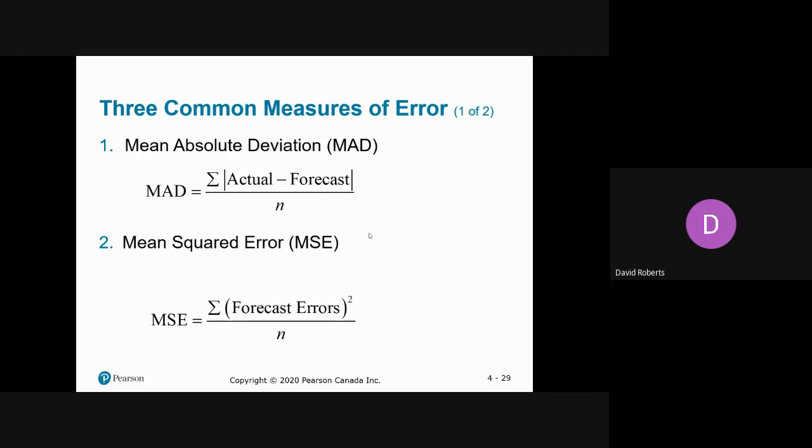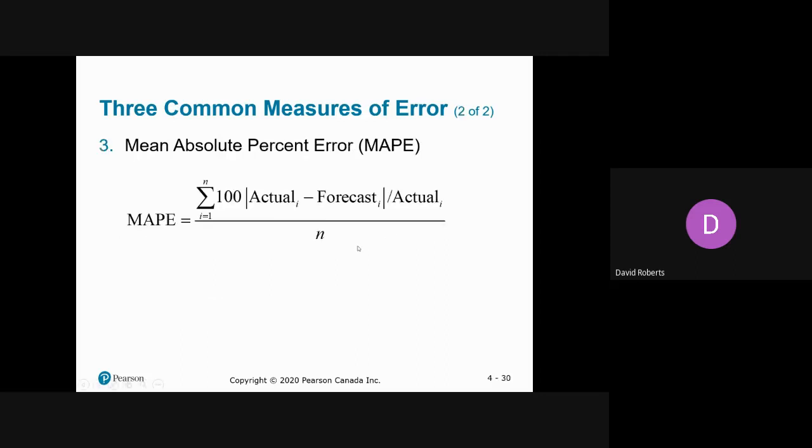Mean square error is the same thing. It just makes, sometimes you're dealing with very small numbers. So it just makes the numbers bigger. It's like a magnifying glass. But the most important by far and away, and that you'll do your simulation on this, is mean absolute percentage error.